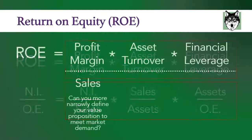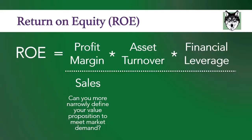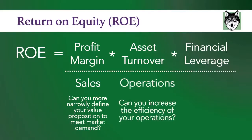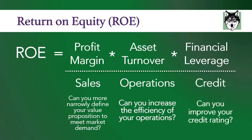Let me give you some examples. Profit margin is driven by sales — you can ask the question: can you more narrowly define your value proposition to meet market demand? Asset turnover is driven by operations — you can ask yourself: can you increase the efficiency of your operations? Financial leverage is driven by your credit — here you can ask: can you improve your credit rating? I hope you can see that this equation is allowing you to understand what is driving your return on equity and showing where you have opportunity to improve.